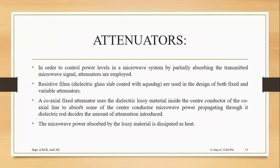An attenuator is something which will reduce your power level — it is a device which controls power levels in a microwave system. It will partially absorb the transmitted signal so that the power level will be reduced. Suppose one device is giving you a power level at 90 dB and you have no device to observe that 90 dB in — say — a VSWR meter, which is a voltage standing wave ratio meter, which you will use in the lab to record readings of what you observe in a microwave system.